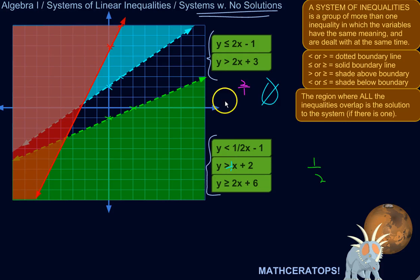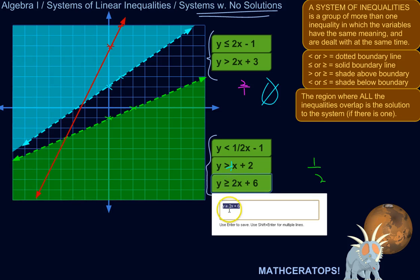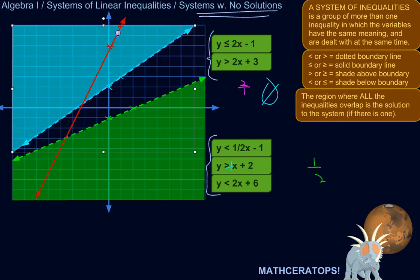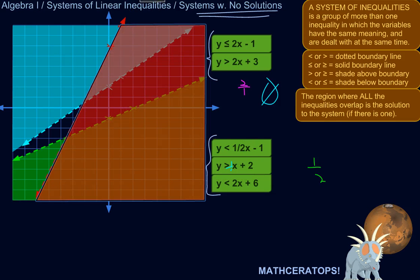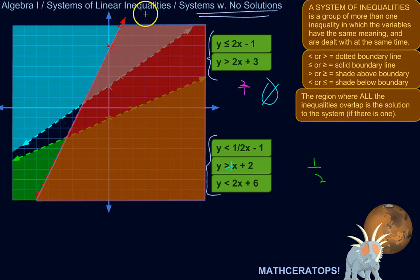So those are our three inequalities in that system. Hold on. There's a solution. We're not done yet. Sorry. Changing the equation. Less than. So it's going to be below, we're going to shade below the line. I just totally switched the equation on you so that there would be no solution. That's better.